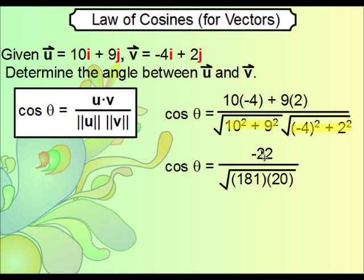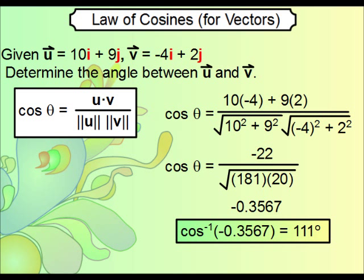Once you get these two values here, you can simply take that answer, which will end up being 181, and this answer, which will end up being 20, and then multiply them together under one radical. With a little bit of calculator work, taking negative 22 and dividing by this quantity, we get negative 0.3567. What we want essentially is to determine the arc cosine of this value, which yields 111 degrees. That's the angle which those two vectors, if graphed from position, would form.